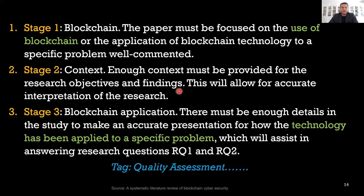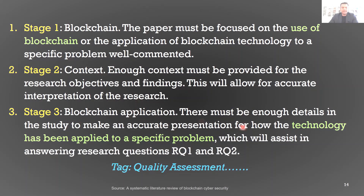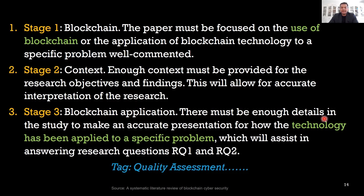The second stage requires that enough context must be provided for the research objective and findings, which will allow for accurate interpretation of results. We are looking at the content of the paper to see whether it helps us answer our research questions. That line provides the justification for why this criteria is essential — there must be enough details to make an accurate presentation of how the technology has been applied.